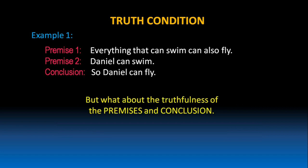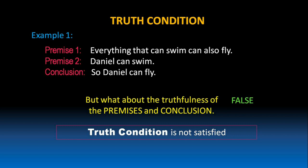But what about the truthfulness of the premises and the conclusion? When we look at premise 1, it says everything that can swim can also fly. Is it true in the world in which we are living in? It is false. Because premise 1 is false, it leads to the wrong conclusion that Daniel can fly just because he can swim. That's why we can say, truth condition in this argument is not satisfied.